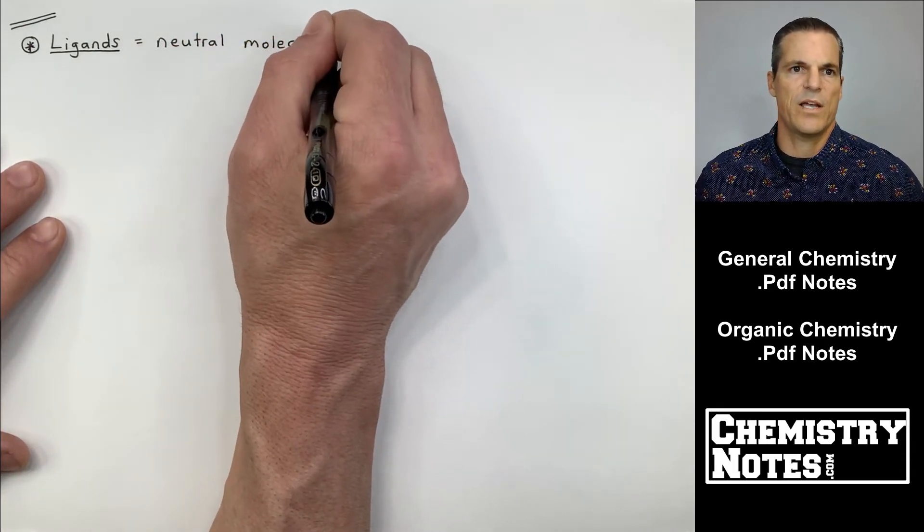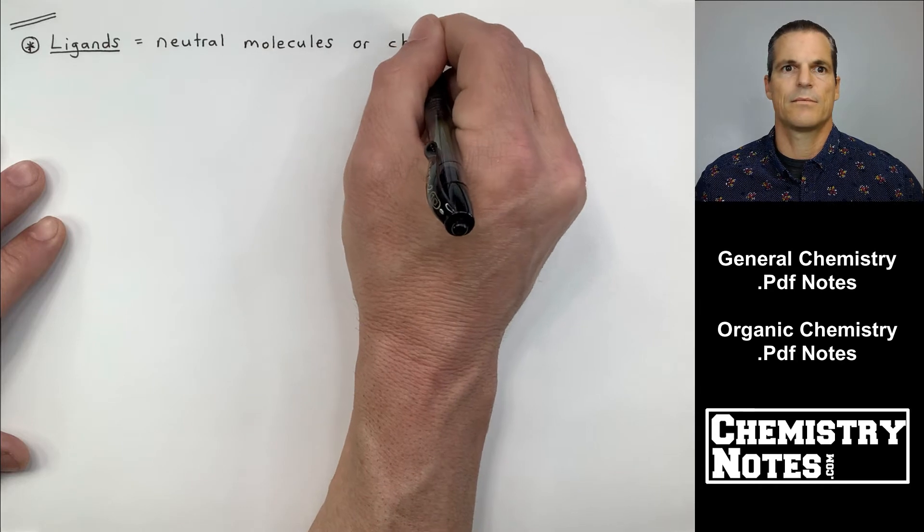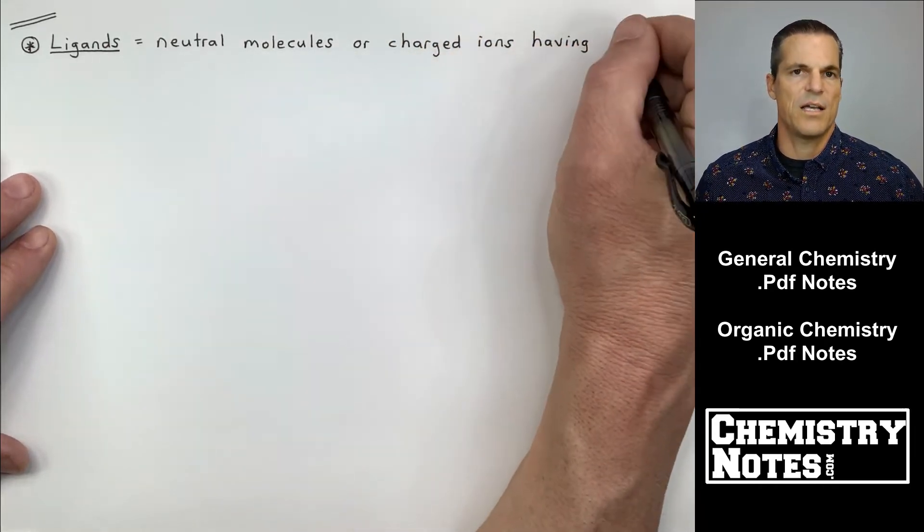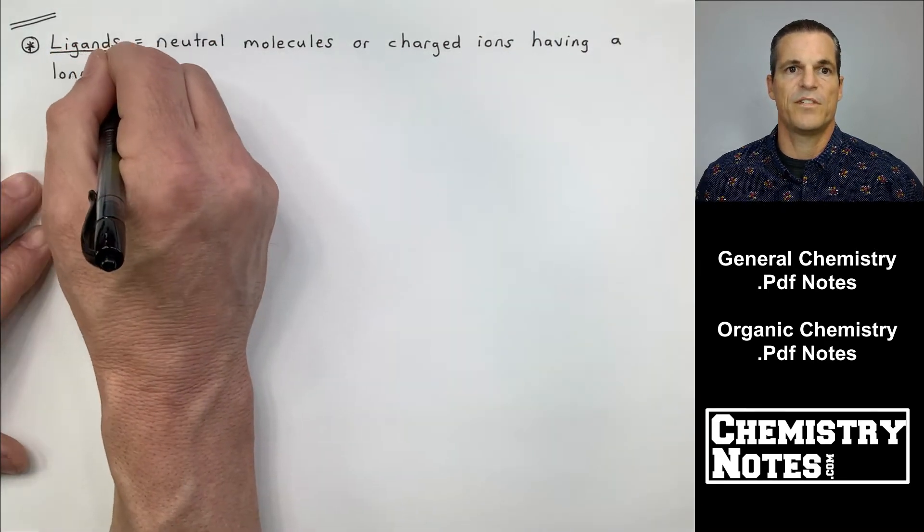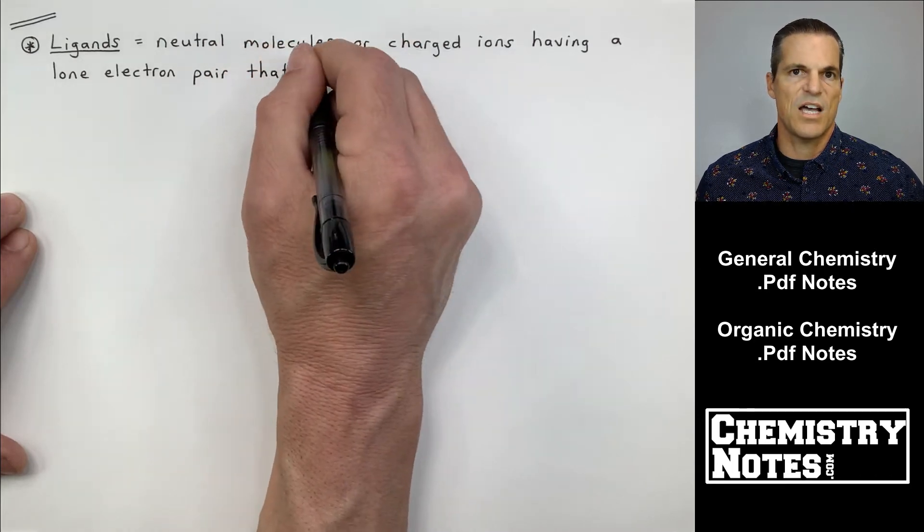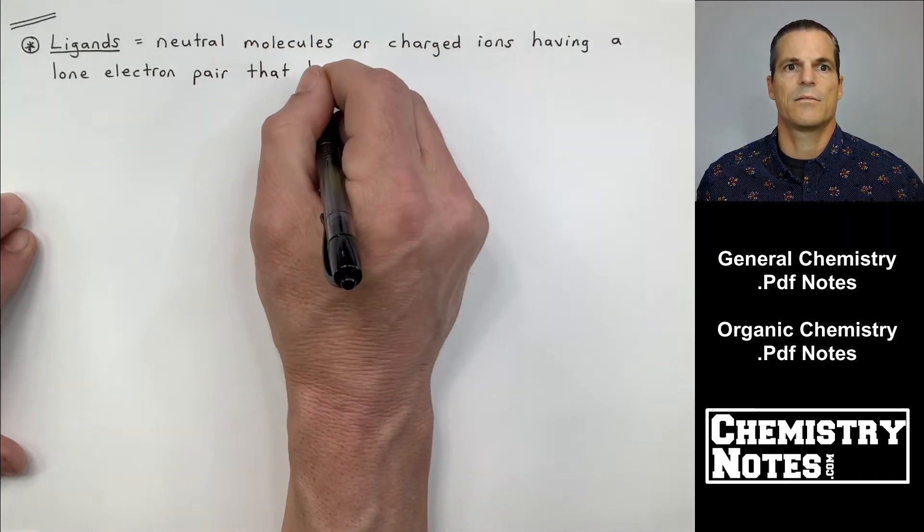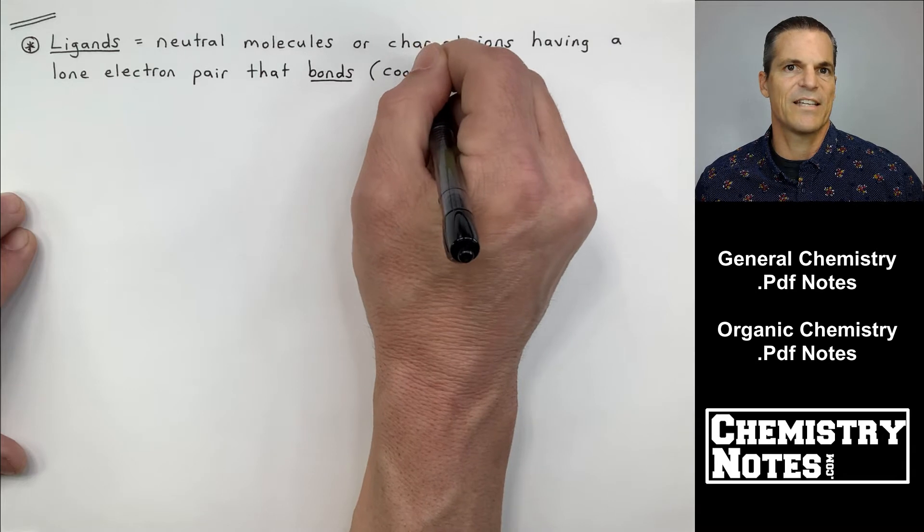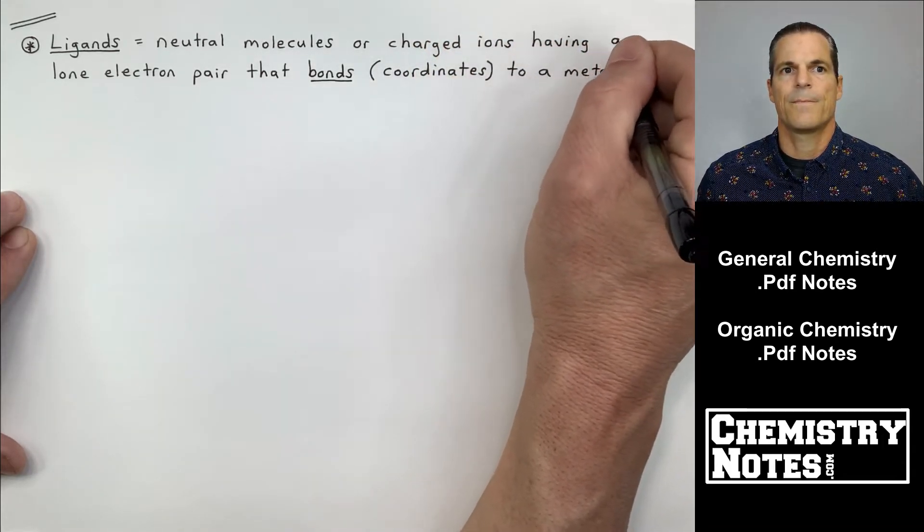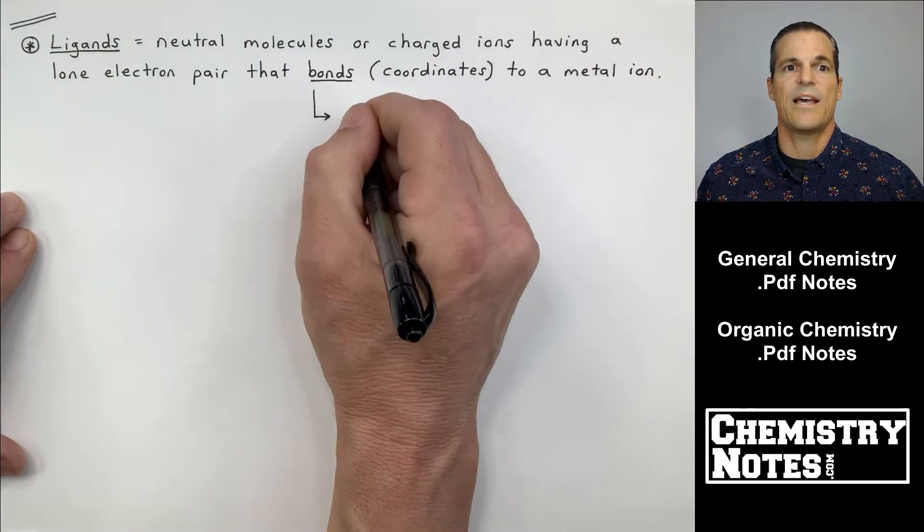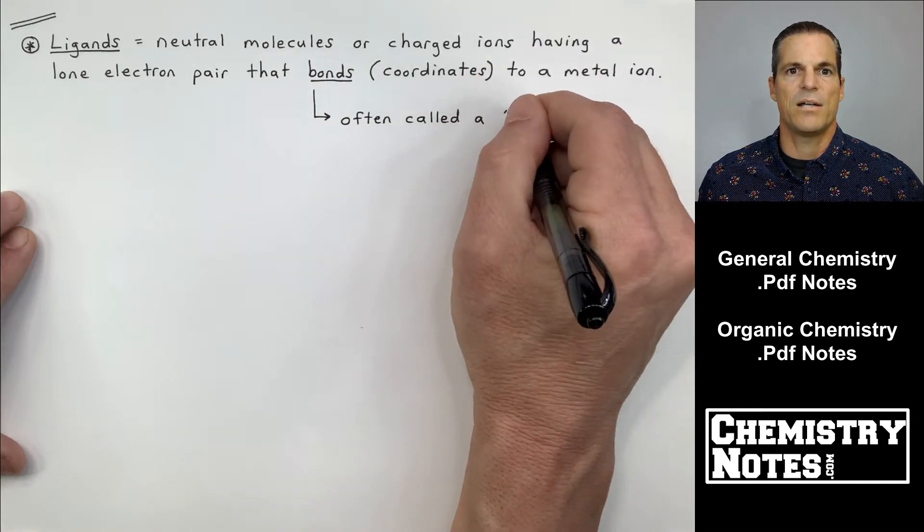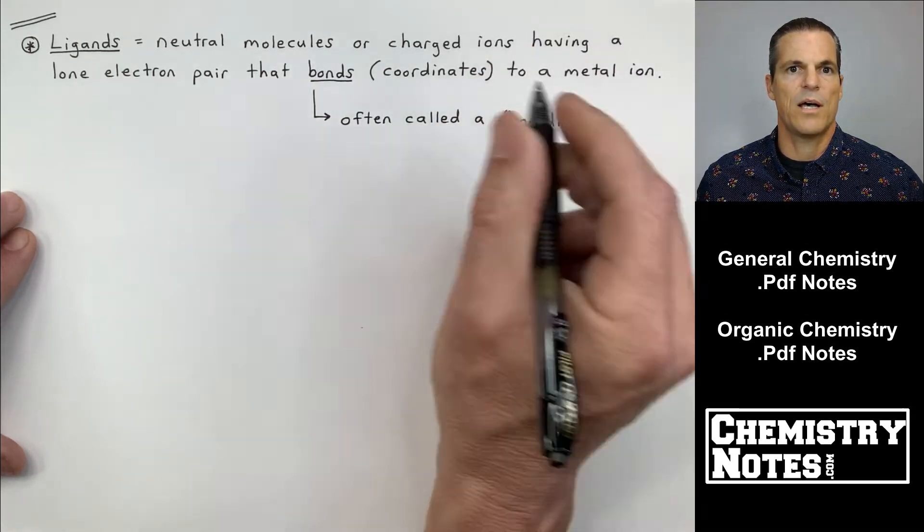Top of a new page of notes here. We have more on ligands. Now, ligands are neutral molecules or charged ions. We've seen one of each. We've seen a neutral molecule NH3 and we've seen a charged ion Cl minus. I should say we've seen a neutral ligand NH3 and we've seen a charged ion Cl minus.